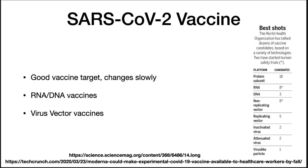SARS-CoV-2 turned out to be a good vaccine target. It has the S protein covering its surface, which is easily identified by the immune system. Three vaccines have emergency authorization for use in the U.S.: Pfizer, Moderna, and Johnson & Johnson. The Pfizer and Moderna vaccines are both mRNA vaccines — an RNA encoding a viral protein is injected into patients, translated at the ribosome, and the resulting viral protein elicits an immune response.